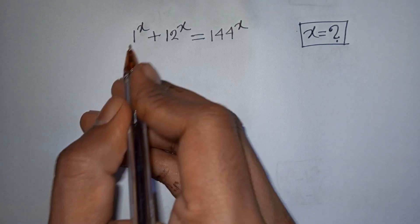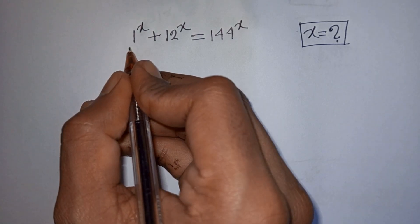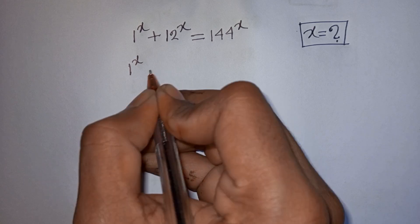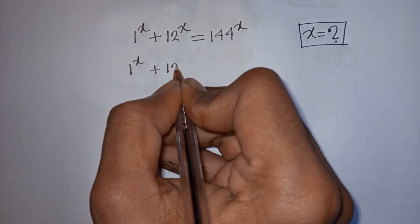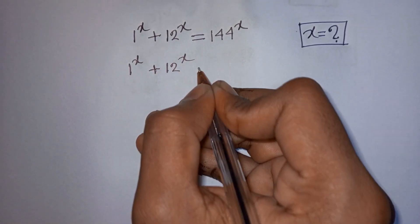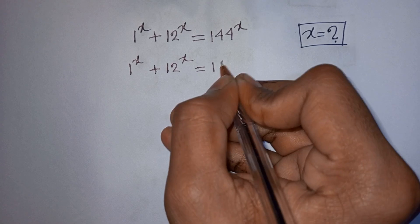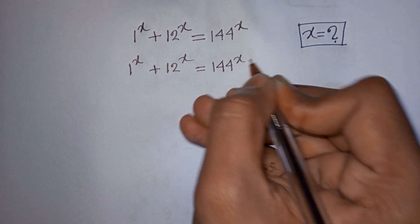How to solve this nice exponential equation: 11^x plus 12^x is equal to 144^x.